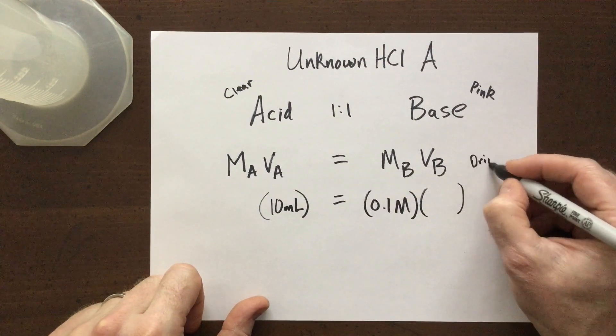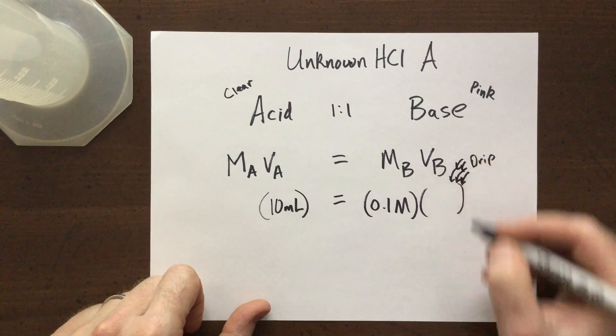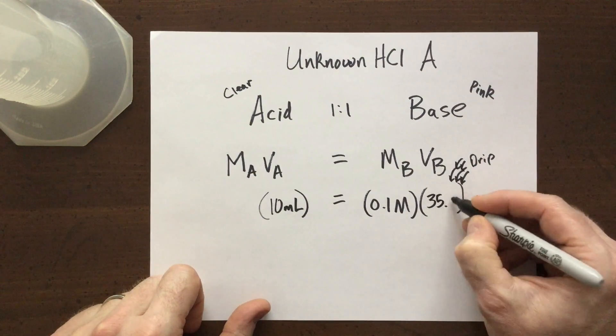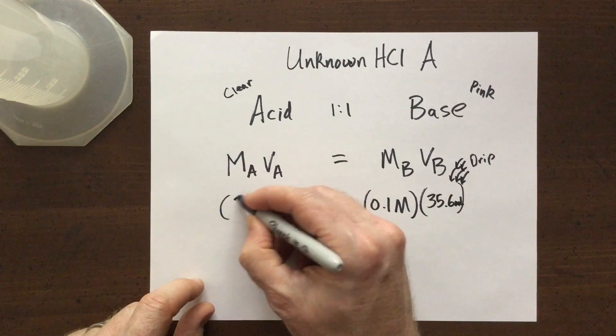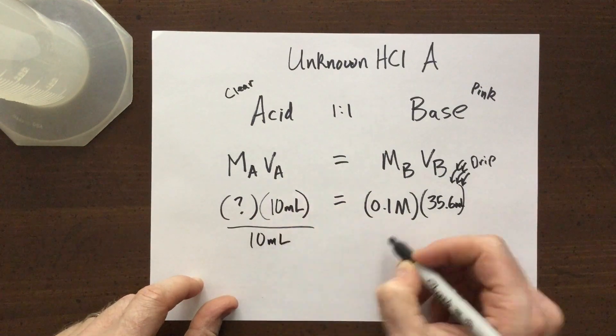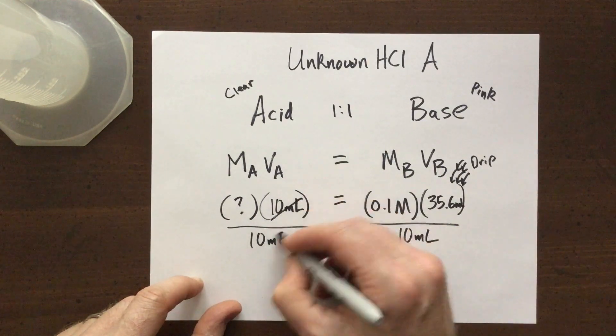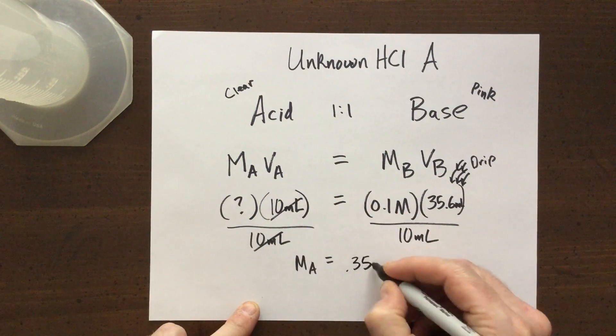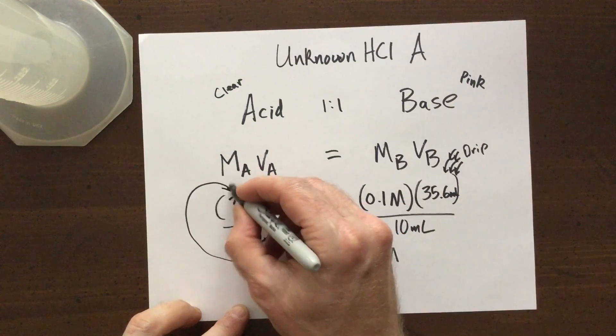And what we did then is we slowly dripped the base over until it changed from clear into pink. We found out it was a total of 35.6 milliliters. So this left us with one unknown variable. We use our algebra and solve and find out that the molarity of the unknown acid is 0.356 molar.